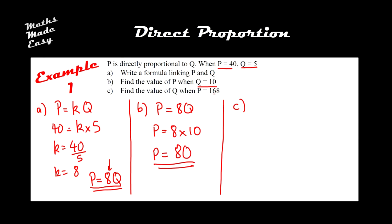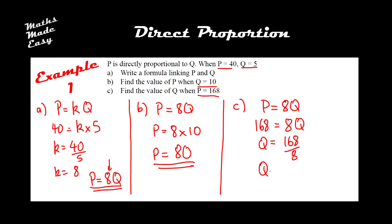For part C: find the value of Q when P is 168. Write out the formula P equals 8Q, then substitute in P as 168: 168 equals 8Q. Divide both sides by 8, so Q equals 168 divided by 8, which gives Q equals 21. This is a perfect example of how to tackle direct proportion: find a formula first using K, then use it to find missing values.